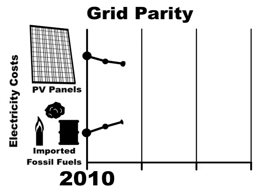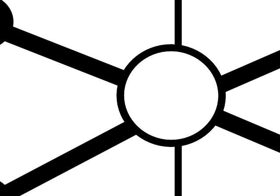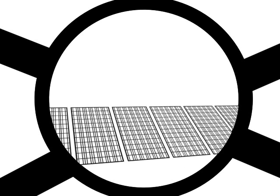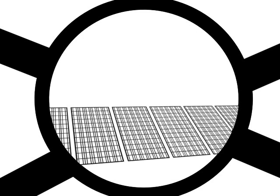Grid parity is simply the point in time when the falling costs of PV equals the rising cost of conventional electricity. From that point on, PV becomes the electricity producer of choice. And the idea of burning fossil fuels for electricity just doesn't make economic sense.